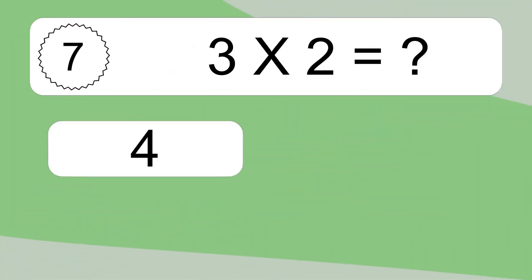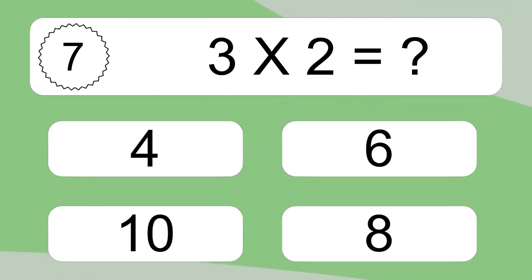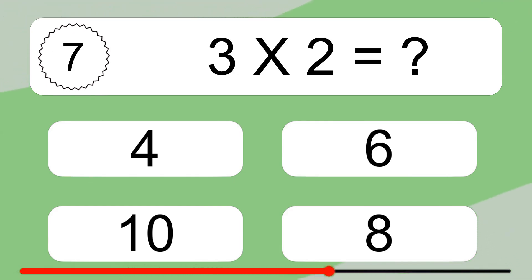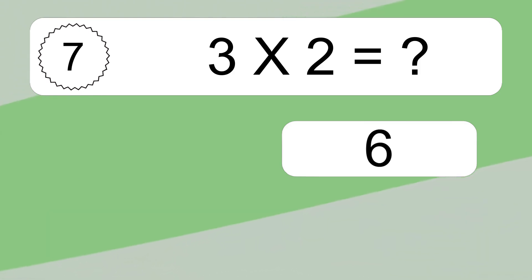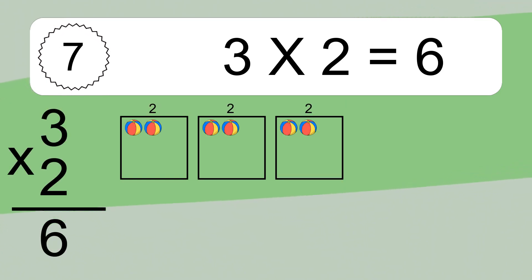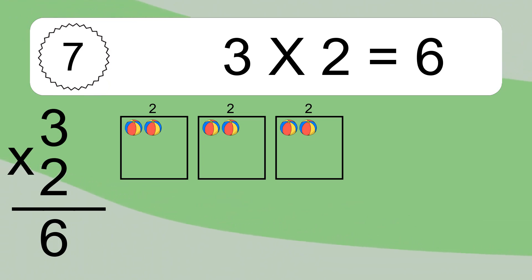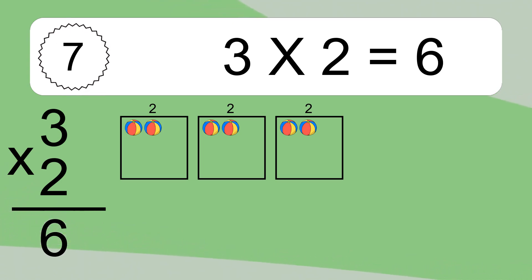3 times 2 equals what? 3 times 2 equals 6. We have 3 boxes, and each box has 2 colorful balls inside. If you count all the balls in all the boxes together, you will have 3 times 2 balls. This equals 6 balls.